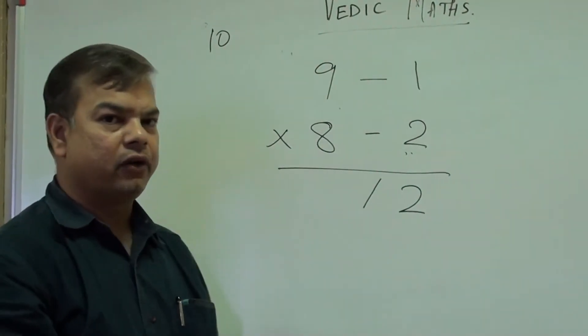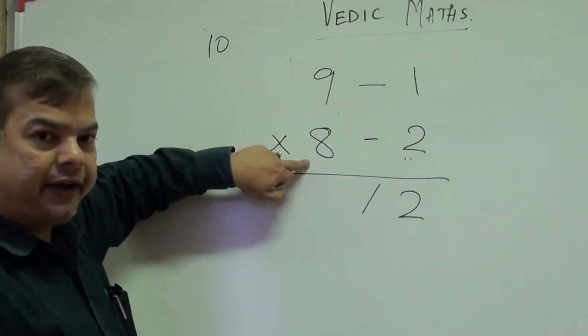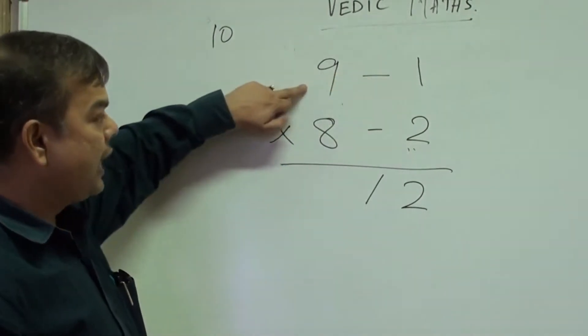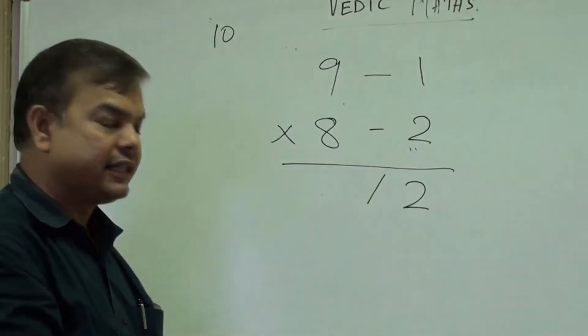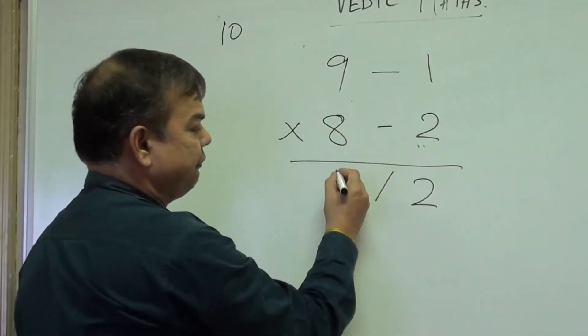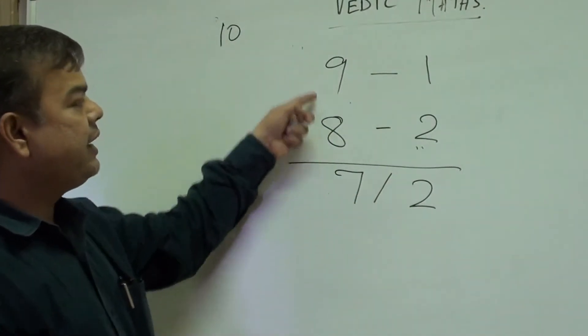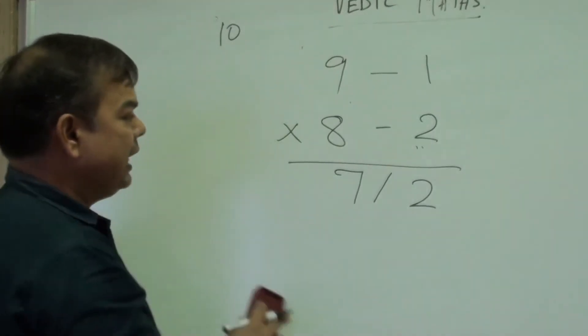Now you will be doing cross addition, so you add 8 plus minus 1, or 9 plus minus 2. So this is 8 minus 1, that is 7, or 9 minus 2, that is 7. So the answer is 72.